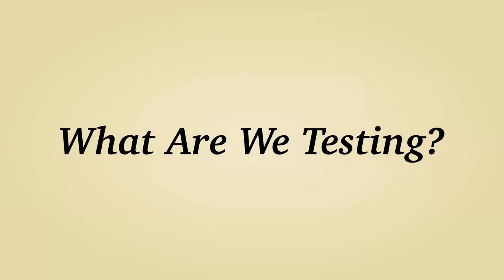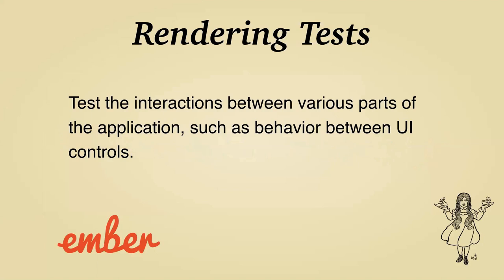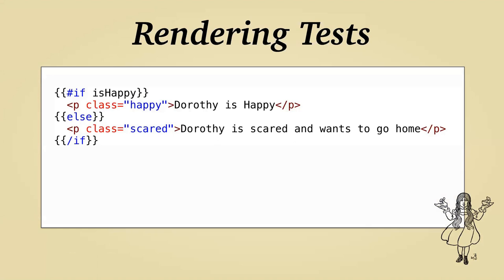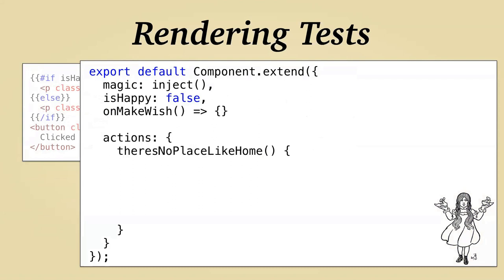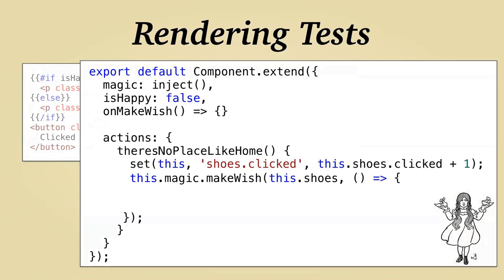Rendering tests are usually for testing interactions between parts of the UI — we think of these as component tests. Let's have a component for Dorothy: when she's happy, we'll show her happy; when she's not, we'll say Dorothy is scared and wants to go home. She'll have a button that, when clicked, calls an action of `thereIsNoPlaceLikeHome`. The code behind this sets up default state `isHappy`, gets our magic service, and has an action that increments clicks on the shoes and calls our `makeAWish` function. If that wish gets executed, it sets Dorothy to happy.